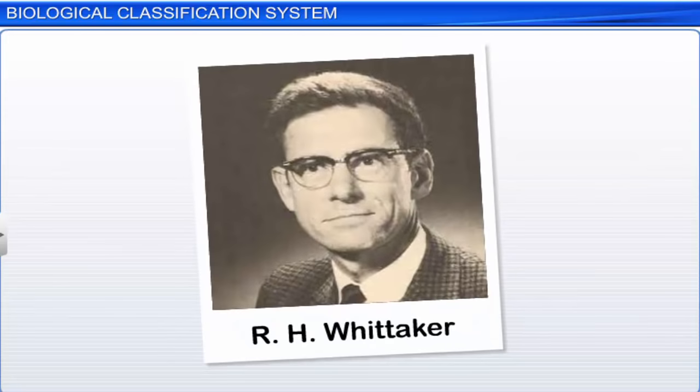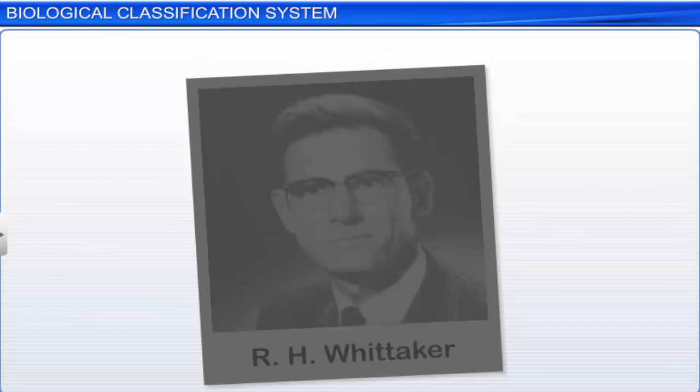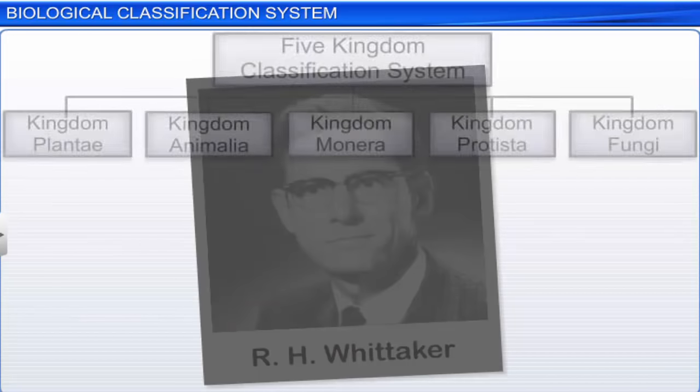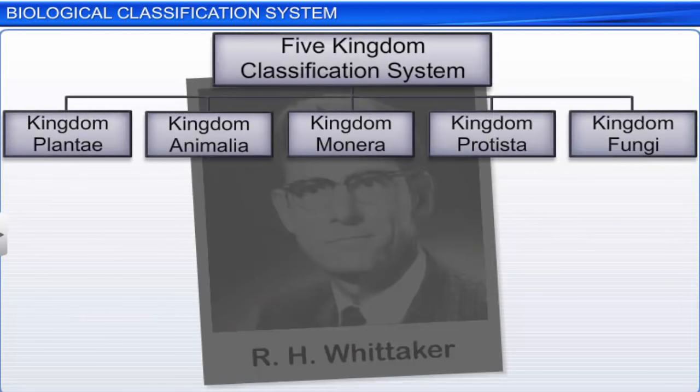New studies about various organisms also revealed enormous variations of characteristics within organisms of the same group, like cell structure, mode of nutrition, methods of reproduction, and evolutionary relationships. Therefore, though the two kingdom classification system was used for a long time, it proved to be an inadequate system. In 1969, R.H. Whittaker proposed a five kingdom classification system.